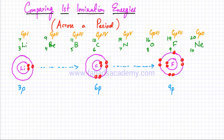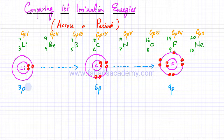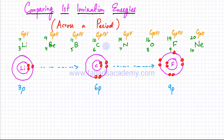In this video lecture we're going to compare the first ionization energies of elements across a period. Within period two, we're going to try and remove one electron from each element. I've written down all the elements and group numbers: lithium, beryllium, boron, carbon, nitrogen, oxygen, fluorine, and neon in group zero.